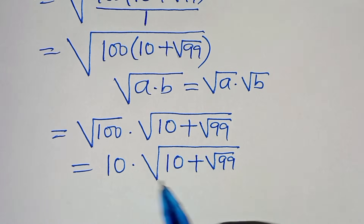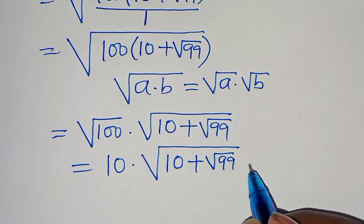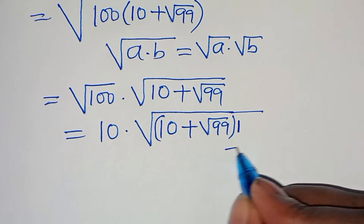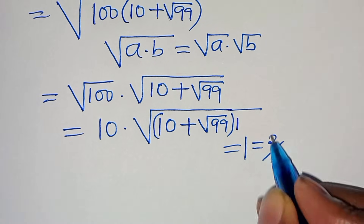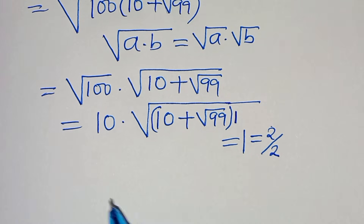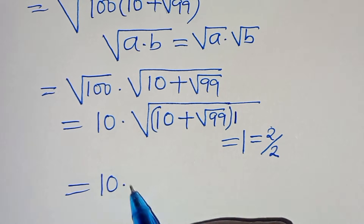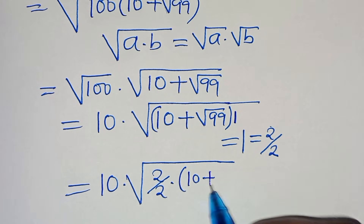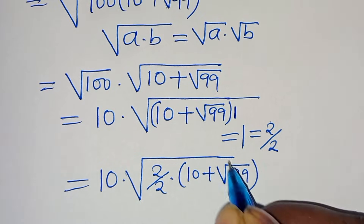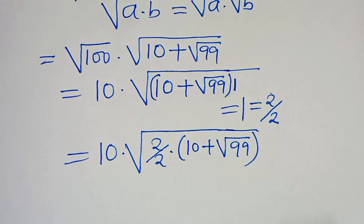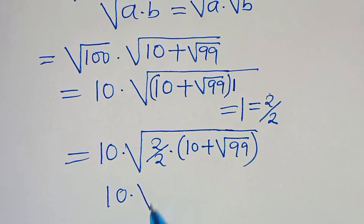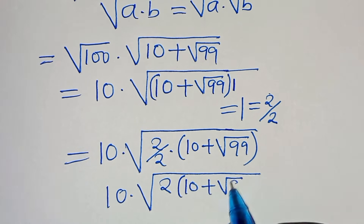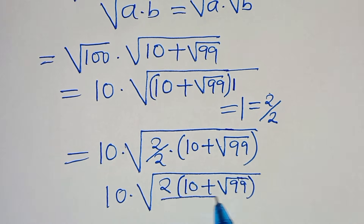Now we have the square root of 10 plus square root of 99. We note that 1 is common, and we can express 1 as 2 over 2. This means we have 10 multiplied by square root of 2 over 2, multiplied by 10 plus square root of 99, giving us 10 times square root of 99 in the numerator, over 2 times the quantity 10 plus square root of 99, all divided by 2.